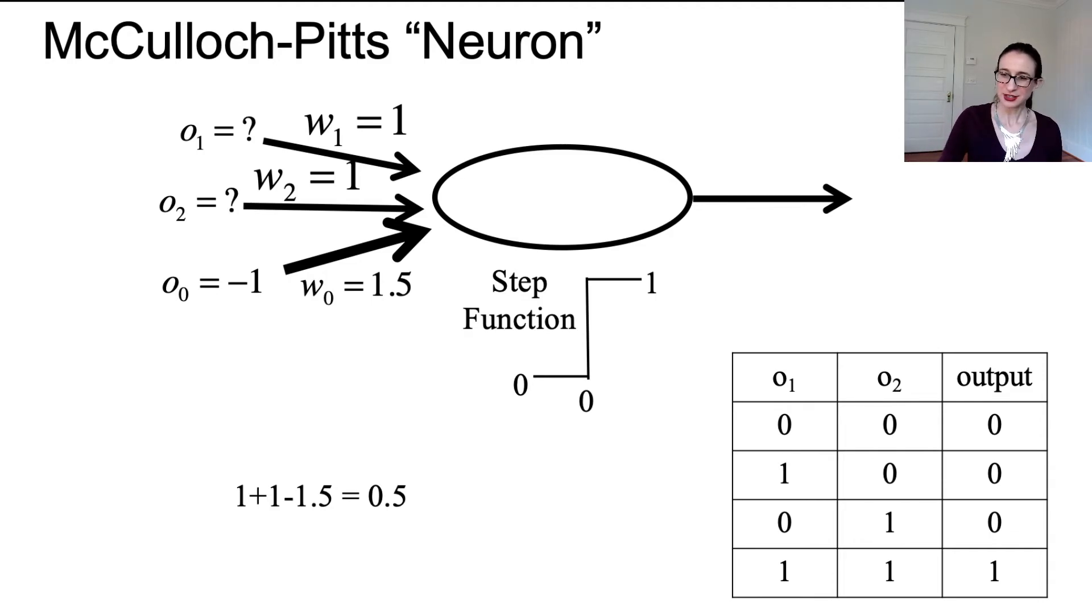In other words we have a model, we have a function here that computes AND. If both of these things are 1, if both O_1 and O_2 are 1, then me computes 1. Otherwise 0. This is the AND function.